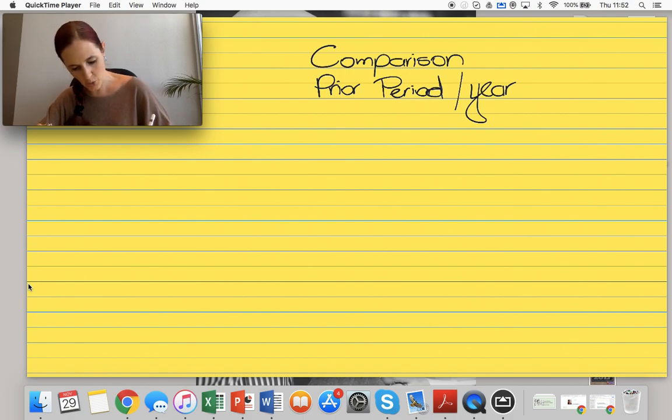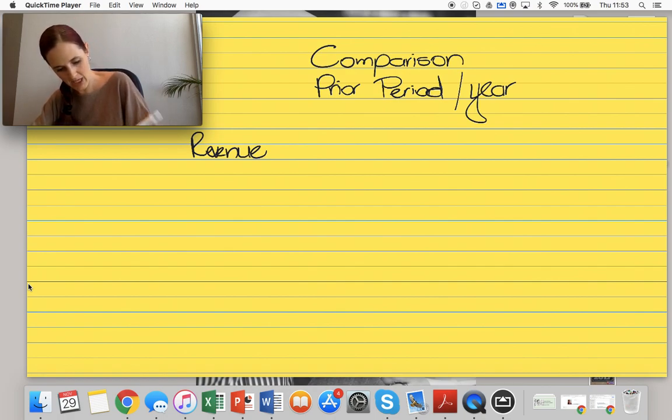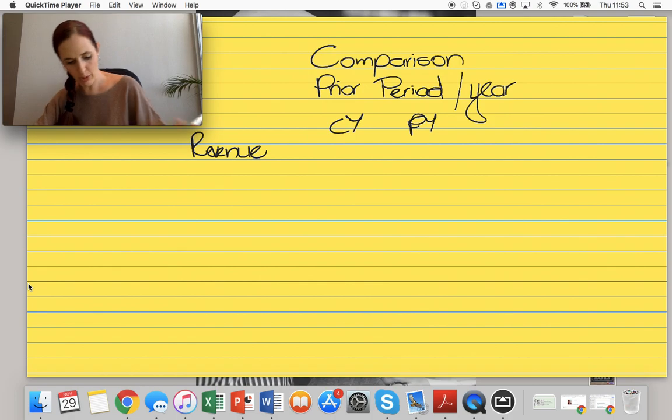So let's assume that we're auditing revenue, and you'll notice that I'm using lined paper because I really struggle to write in a straight line without them. So let's take a look at our current year and our prior year.